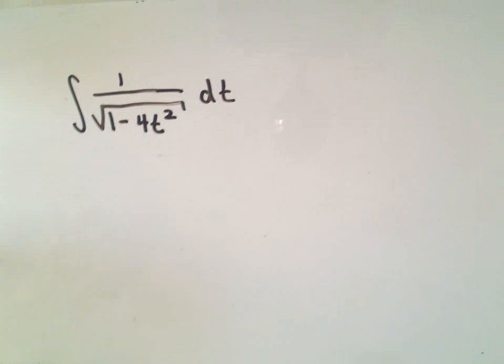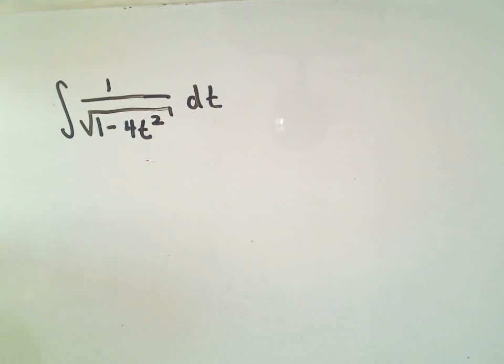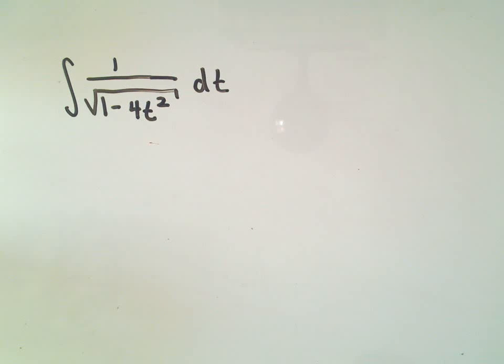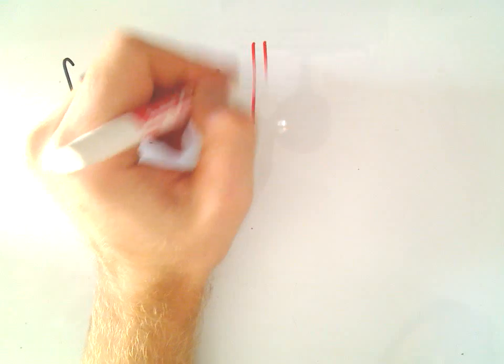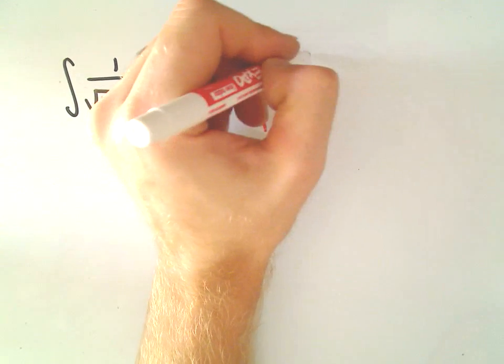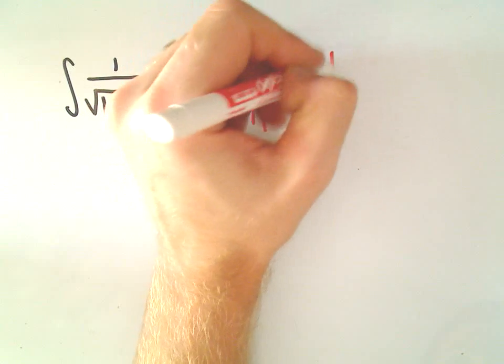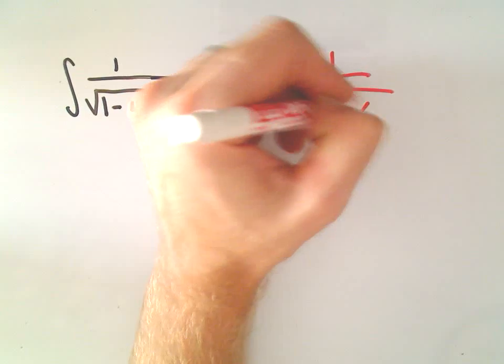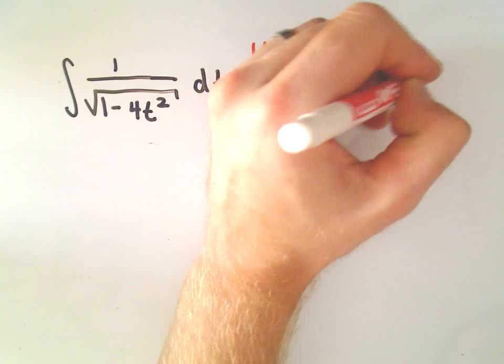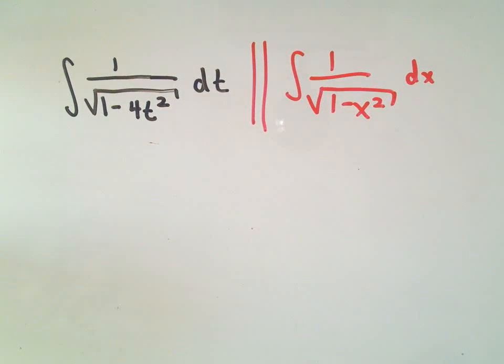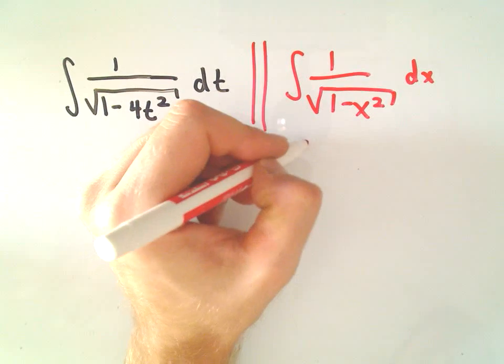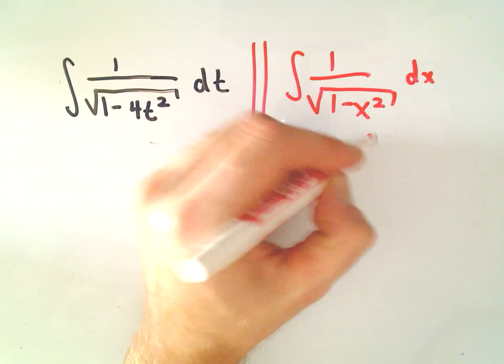So, typically when I see something like this, if I know it's an inverse trig function, I'm just thinking about which one it looks like the most. Well, certainly of the two that we just had listed, it looks the most like the integral of 1 over the square root of 1 minus x squared, which we said was arcsine of x.